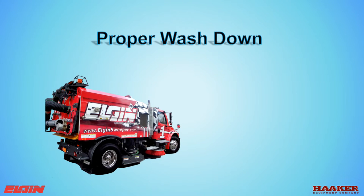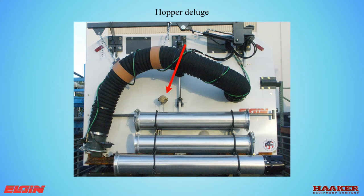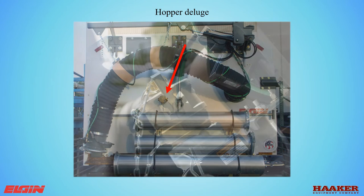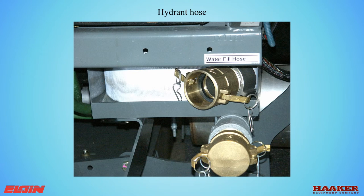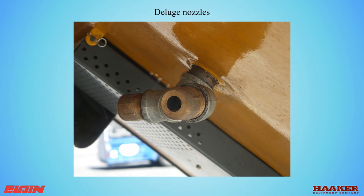Proper wash down: all air ducting, dust separator, and screens need to be cleaned to allow more airflow for better sweeping. The fan and pressure slot should be inspected after wash down for debris buildup and cleaned as needed. An optional deluge system is available to assist flushing the hopper with a fire hydrant — this should only be used in a wash rack with a clarifier. Using the hydrant hose and connecting to the deluge system, with the hydrant on, working the door up and down will remove the majority of debris.